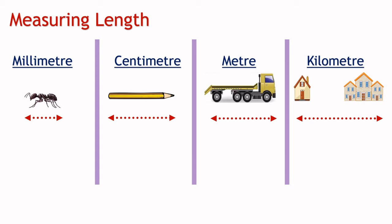In this example, the ant is 8 millimeters long. The pencil is 5 centimeters long. The truck is 7 meters long. And the distance between this house and school is 2 kilometers.